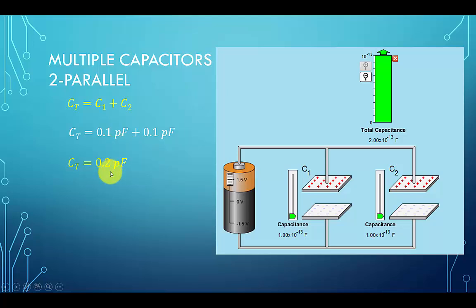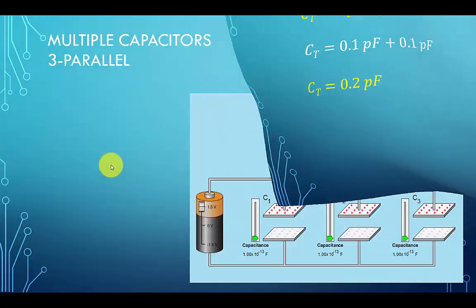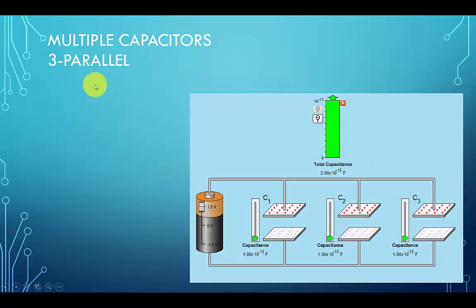Now let's take a look at three capacitors connected in parallel. And as expected, you should see the sum of those three values, each again with 1 times 10 to the minus 13 farads. And hence, this leads to 3 times 10 to the minus 13 farads or 0.3 puffs.